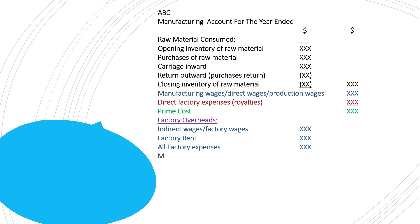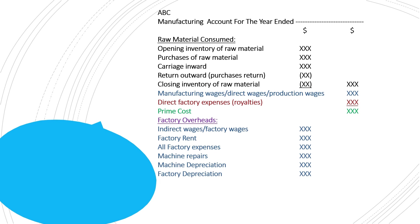Machine-related expenses will also be recorded in the manufacturing account, such as machine repairs and machine depreciation. These expenses are related to the factory because machines are used for the purpose of production operations. So machine expenditures are also recorded as factory overheads. I am listing only a few expenses just to give an idea of the types of expenses recorded under factory overheads.